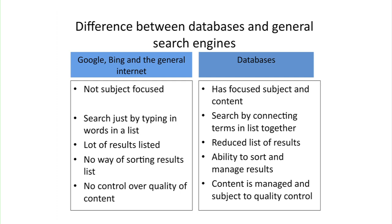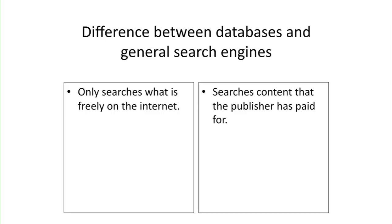You'll also find on the general internet that there is no quality control. Essentially, anybody can publish to a web page, and as long as it's freely available, then the internet will search it. However, with databases, these are produced usually by very knowledgeable publishers, and the content is managed and also has quality control. The main thing to think about is that general search engines will only look for what's freely available on the internet — it won't search beyond firewalls that publishers have put up. Databases, on the other hand, will only search content that the publisher has paid for, so you get restrictions in place from other publishers as well.